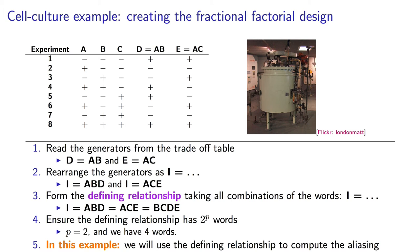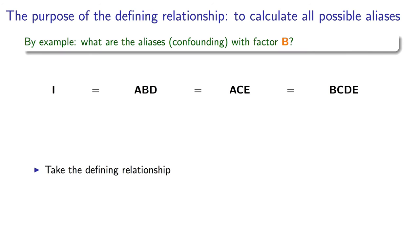So the way we use this defining relationship is that if we want to find the terms that are going to be aliased with, for example, factor B, we go and multiply every word in the defining relationship with that letter B. So let's see what we get.